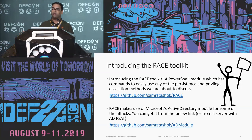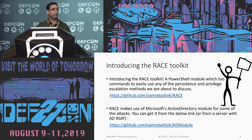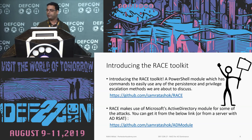We are going to use the RACE toolkit, which will be available on my GitHub repository. It is a PowerShell module with a lot of functions and code to execute the attacks we'll discuss. RACE makes use of the Microsoft signed Active Directory module — the one found on any machine where the AD RSAT is installed. You can maintain a mirror of that or copy it from any domain controller where RSAT is installed.